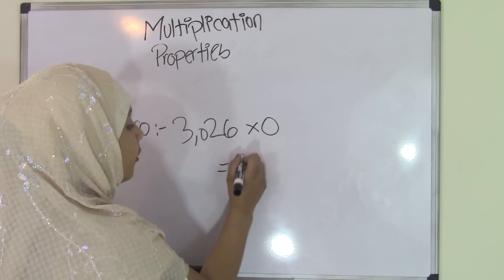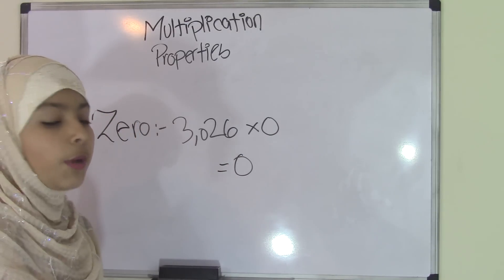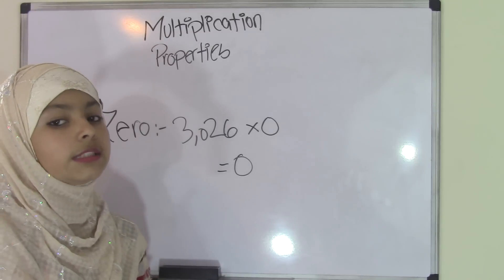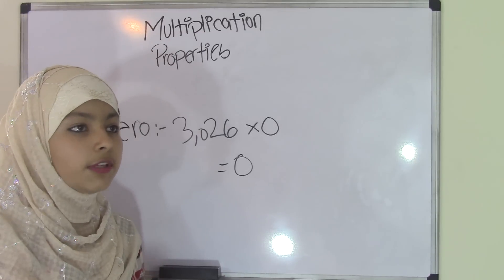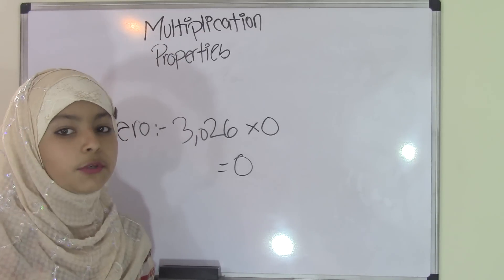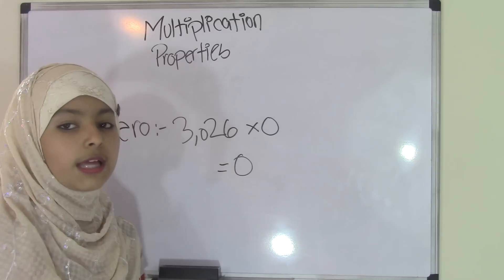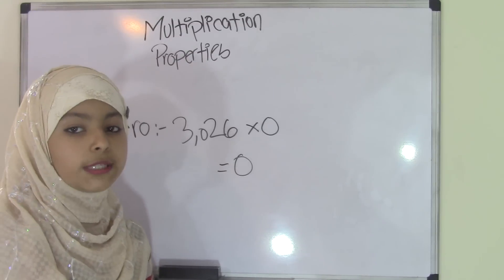your answer will always equal 0. So that's why it's called the zero property because no matter what number it is, because numbers are infinite. Even if you have the biggest number in the world that you can even think of and you multiply that by 0, your product will always equal 0.